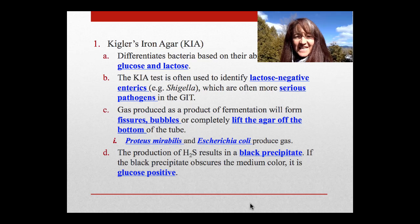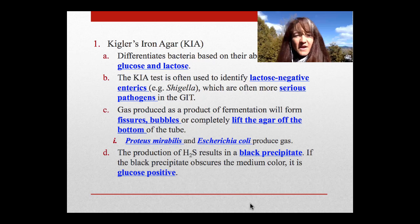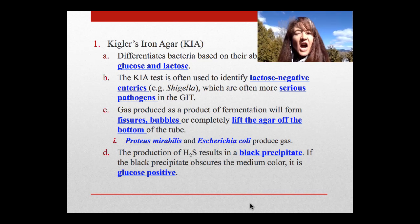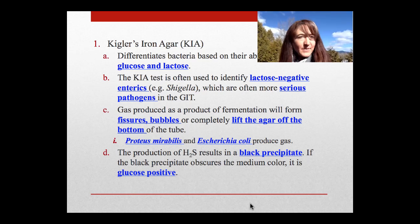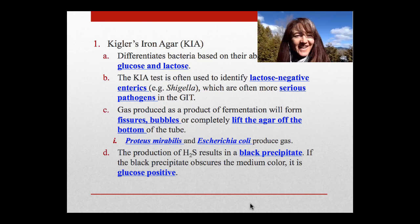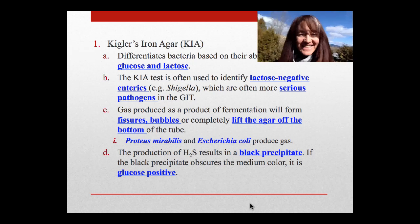Both Proteus mirabilis and E. coli produce gas, so if you see that in those you won't be terribly surprised. Regarding hydrogen sulfide production, the H2S gas reacts with the iron in the agar and creates an iron sulfide, which is a very black precipitate. I'm going to go inside so I can sit down and draw this — but hey, welcome to Lake Placid!